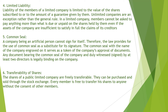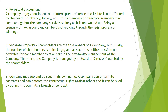The sixth feature is transferability of shares — shares of a public company can be freely transferred, but that is not possible in the case of a private company. The seventh feature is perpetual succession — a company enjoys continuous or uninterrupted existence and its life is not affected by the death, insolvency, or lunacy of its members.